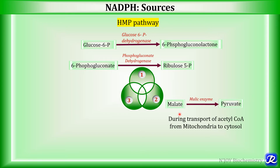The next source is the conversion of malate to pyruvate by the enzyme malic enzyme. This is important during transport of acetyl-CoA from mitochondria to cytosol. Since acetyl-CoA cannot cross the mitochondrial membrane, citrate — formed by condensation of acetyl-CoA and oxaloacetate — enters the cytosol and is cleaved to form oxaloacetate and acetyl-CoA. That oxaloacetate is converted to malate, and then malate is converted to pyruvate by malic enzyme, during which NADPH is formed.